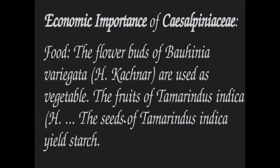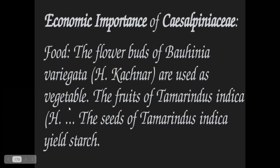Economic importance: The flower buds of Bauhinia variegata are used as vegetables. The fruits of Tamarindus indica contain starch and are used as tamarind in cooking. Bauhinia vahili leaves are used as paper plates (leaf plates). The leaves of Caesalpinaceae are mainly used in curing fever. Some plants are cultivated as ornamentals.